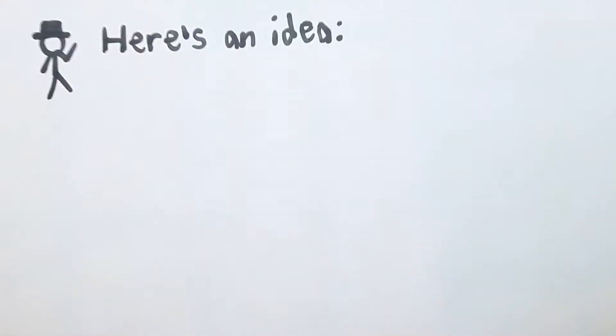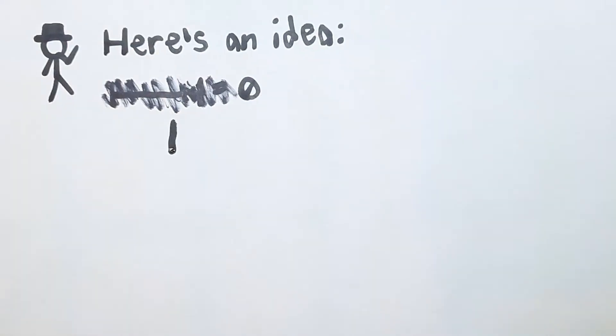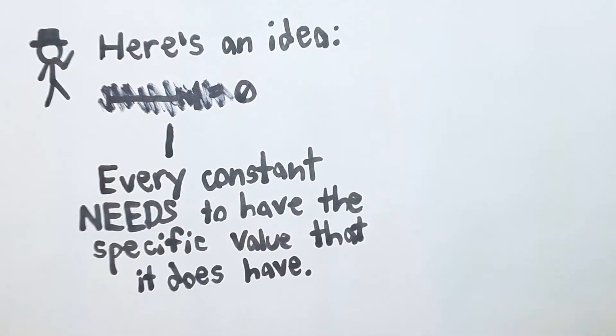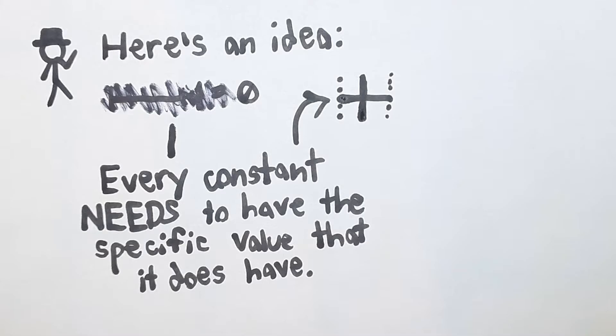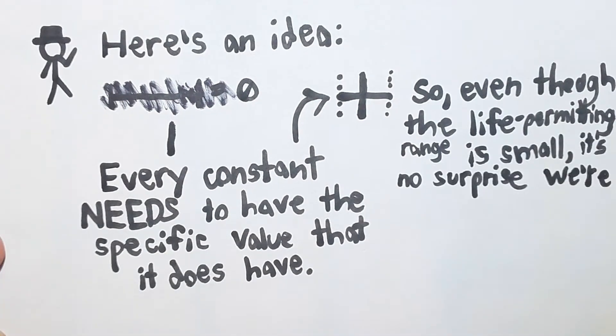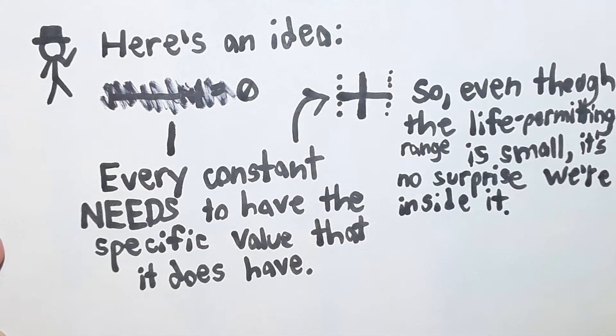Some atheists would ask you at this point, what if the size of the range of the possible values was zero? That's right, every constant needs to have the strength that it does in fact have. The dart thrower started with his dart already in the bullseye. So even though the life permitting range is small, it's no surprise that our constants fall inside.